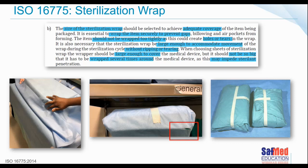When choosing sheets of sterilization wrap, it should be large enough to cover the device but not so big that it has to be wrapped around several times, as this may impede sterilant penetration. Looking at the images, one clearly shows a pack wrapped too tightly, and we also have images of some torn items — possibly because the tray was wrapped too tightly.